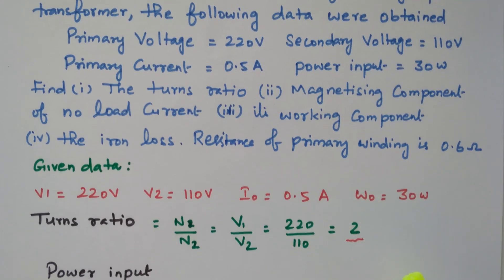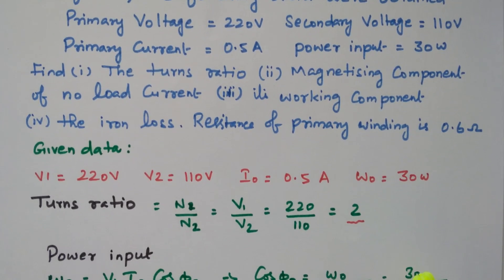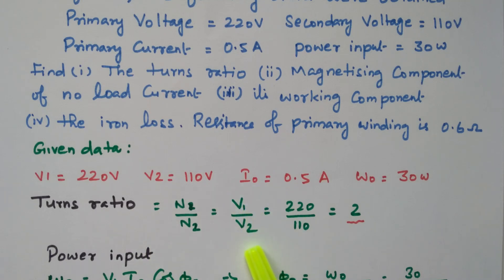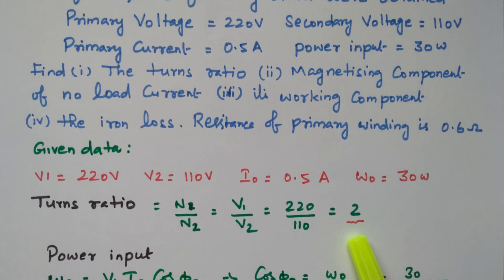From this data we can easily calculate the turns ratio. N1 divided by N2, or V1 divided by V2, that is 220 divided by 110, which equals 2. The turns ratio is 2.